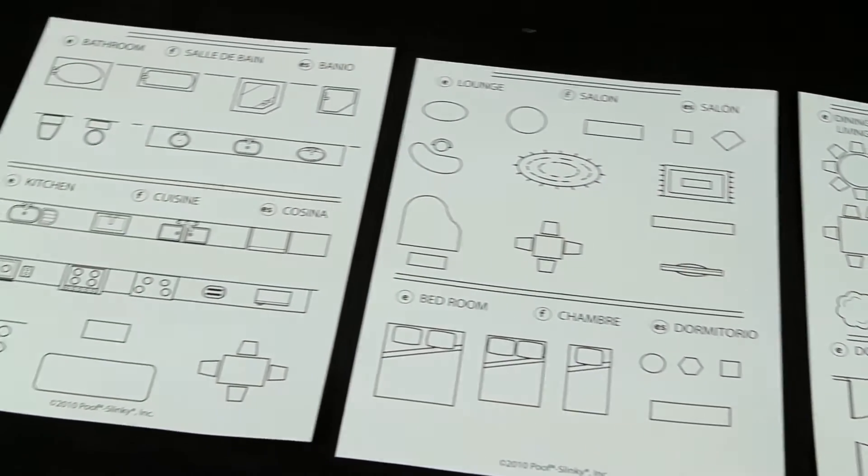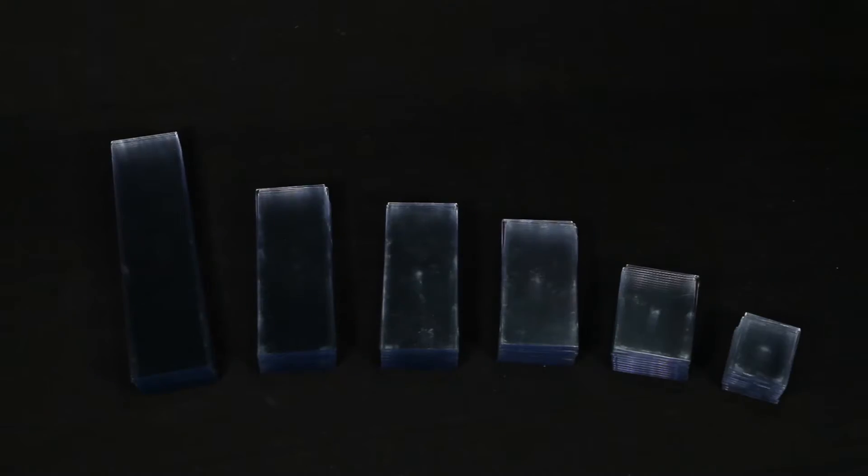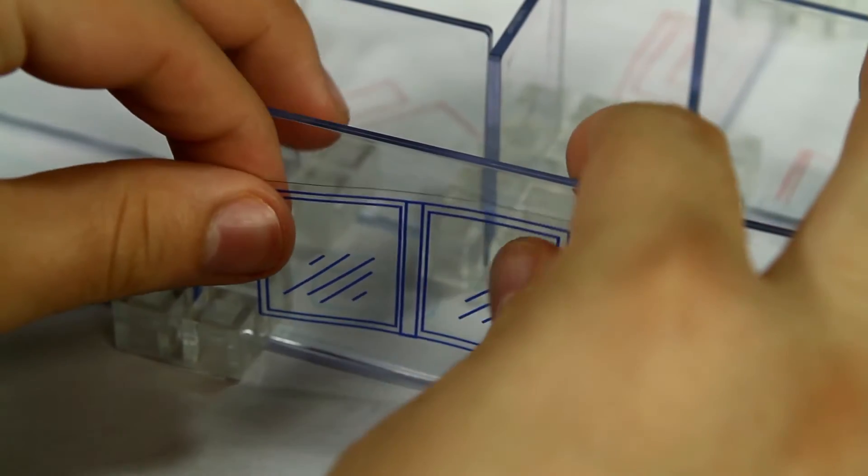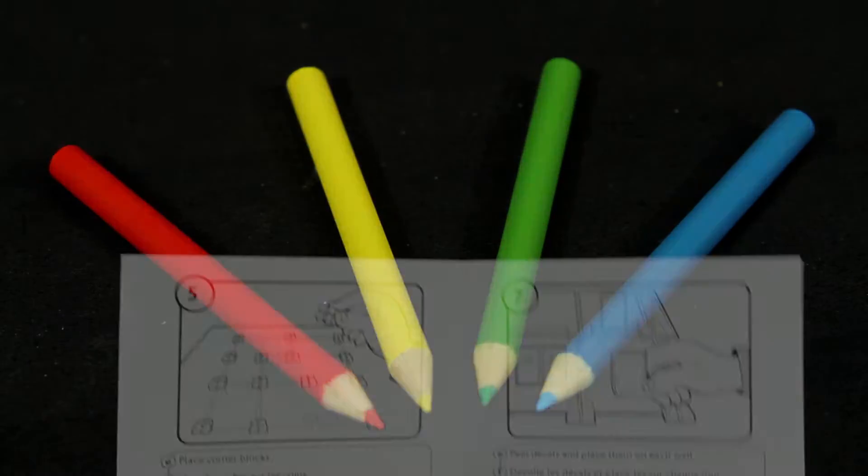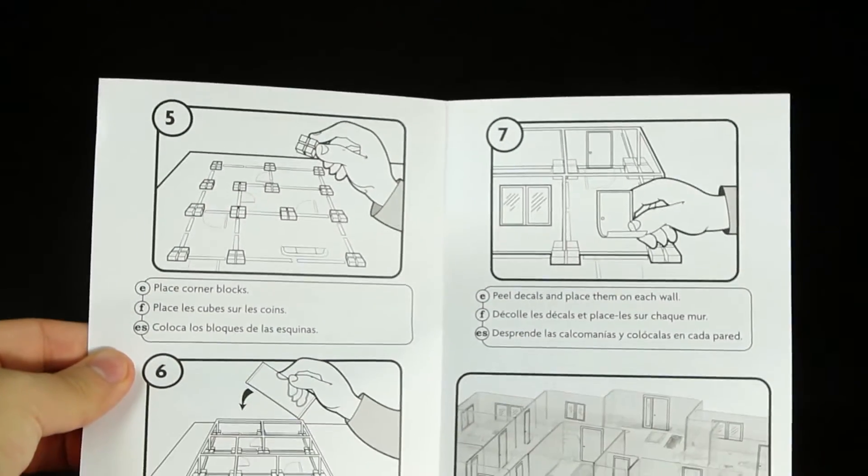With this kit, you'll receive 9 room templates, 6 large pieces of paper, furniture guides, loads of acrylic walls and blocks, peel and stick doors and windows, a giant acrylic work mat, colored pencils, and instructions to get you started building your 3D model.